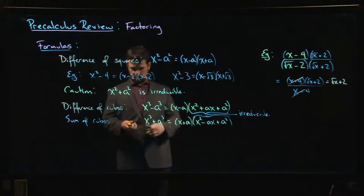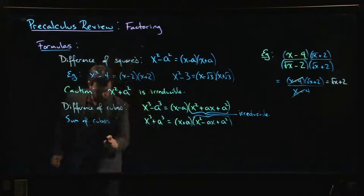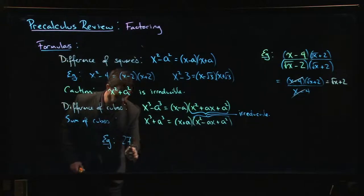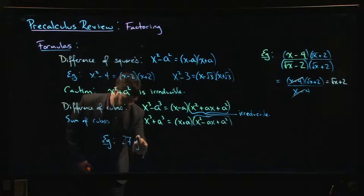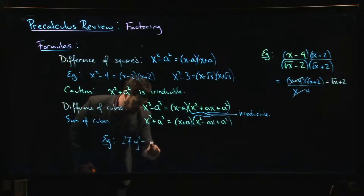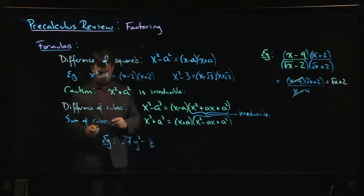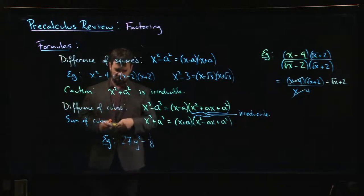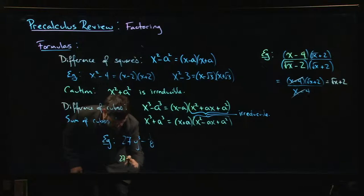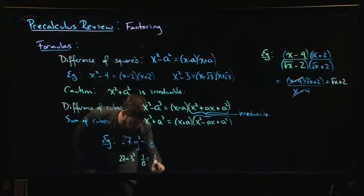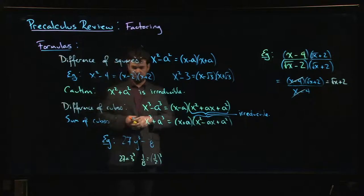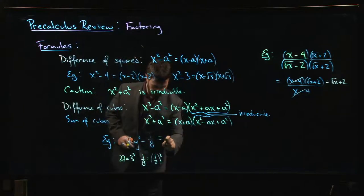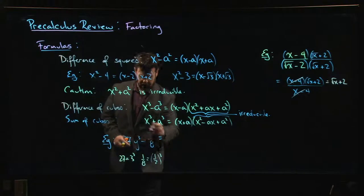As a quick example, somebody gives you something like 27y cubed minus 1 over 8. We say what do I know about those coefficients? 27 is 3 cubed, 1 over 8 is a half cubed. So this is the difference of cubes.